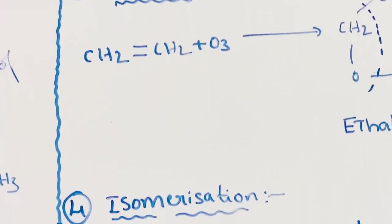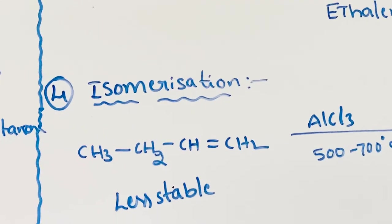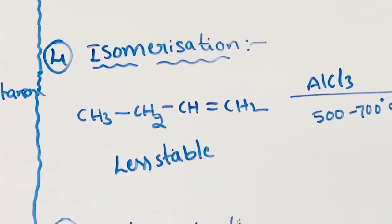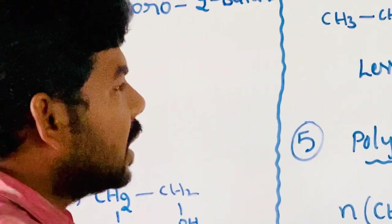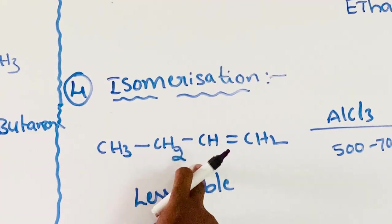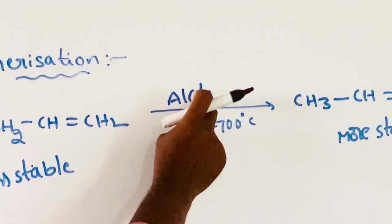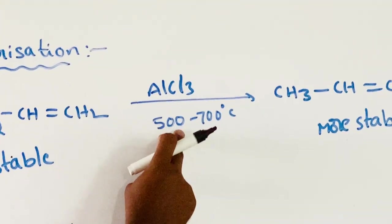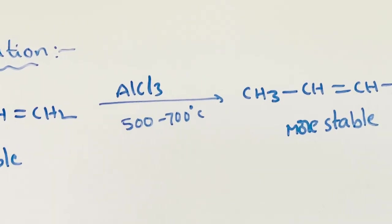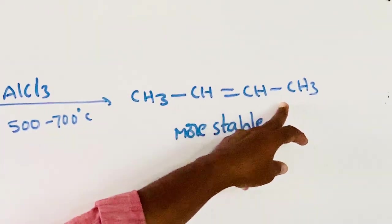Next, isomerization. Isomerization means the molecular formula is the same, but compounds have different structures. Less stable 1-butene on isomerization in the presence of aluminum trichloride at 500-700°C gives more stable 2-butene.